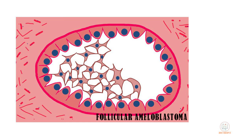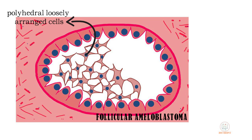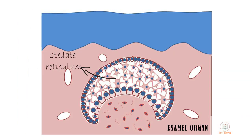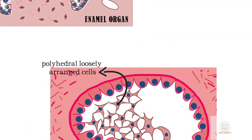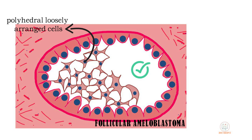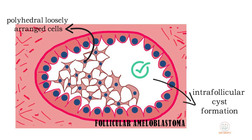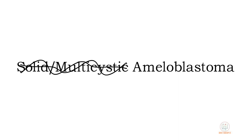The central mass of these epithelial islands is formed by polyhedral loosely arranged cells which resemble the stellate reticulum of the enamel organ. Cyst formation due to degeneration of these stellate reticulum-like cells is relatively common in the follicular type. The term multicystic ameloblastoma was used earlier but is no longer used as it created confusion with unicystic ameloblastoma.